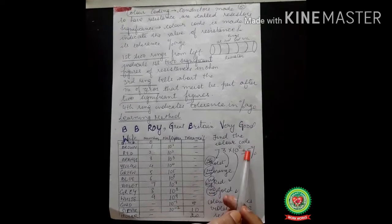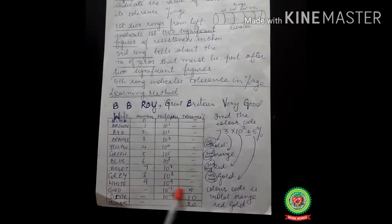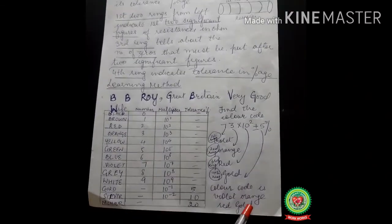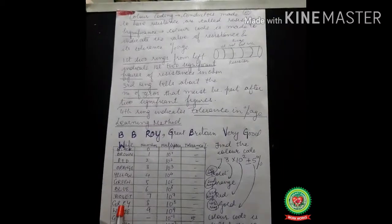So what is the answer? Color code is violet, orange, red, and gold. I hope you have understood the topic. Thank you students.